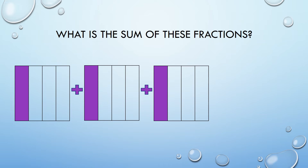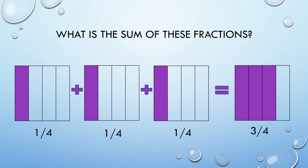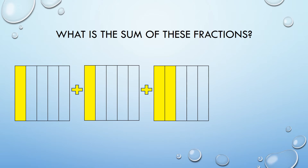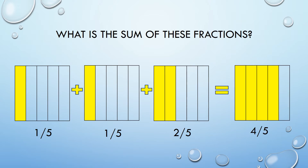What is the sum of these fractions? One-fourth plus one-fourth plus one-fourth. The answer is three-fourths. Even though there are three different fractions, the numerators still add up together and the denominator still stays the same. What is the sum of these fractions? One-fifth plus one-fifth plus two-fifths. Altogether, that equals four-fifths.